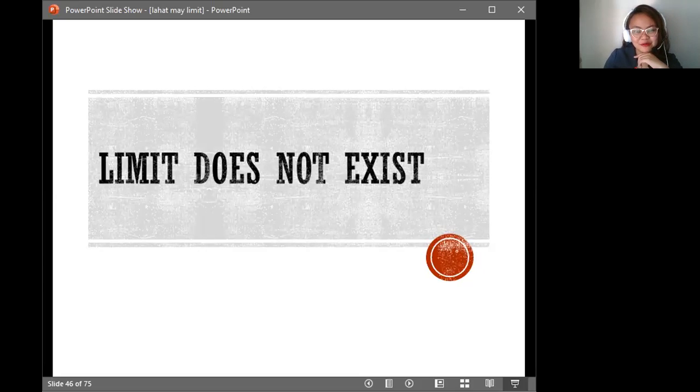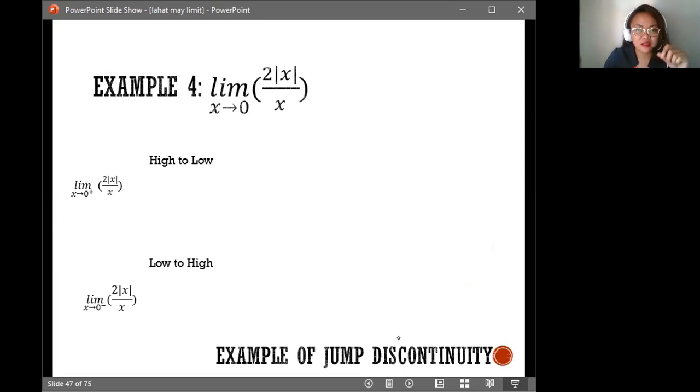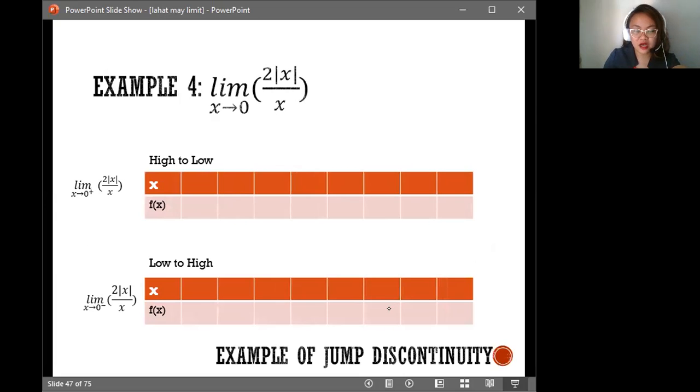Hello, it's Momshelen, and we will discuss in this video solving the type of limit that does not exist using tables and graphs. So let's do this with the example. The example is the limit of the function 2 times the absolute value of x over x as x approaches 0.